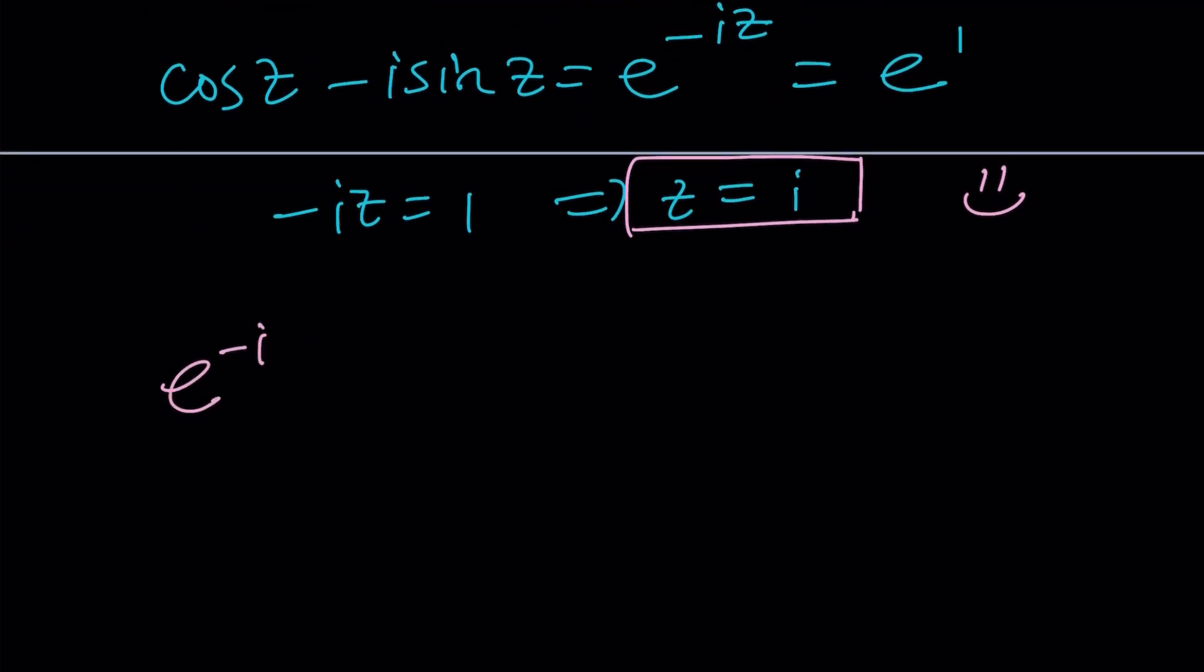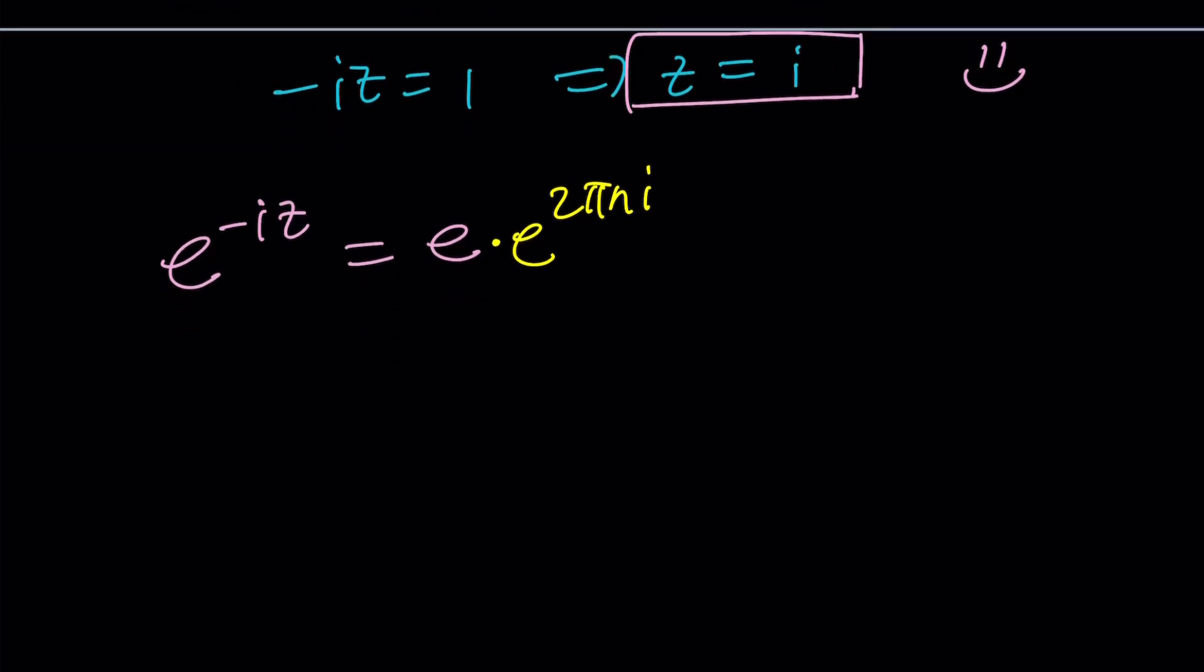So here's what we're going to do. e to the power negative i z equals e. And now I can do something that I just did in my other video. We're only going to multiply the right hand side by one which is e to the power two pi n i, right? So now we have the exponents so we can add them. e to the negative i z equals e to the power one plus two pi n i.